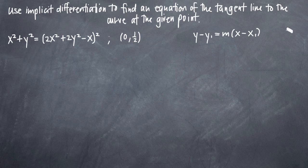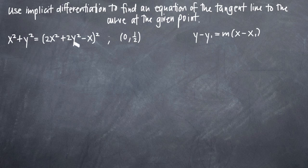In this particular problem, we've been asked to use implicit differentiation to find an equation of the tangent line to the curve at the given point. As you can see, we have a function that's all tangled up in terms of x and y. We can't easily separate x and y, so we really need to use implicit differentiation to find the derivative of this function.